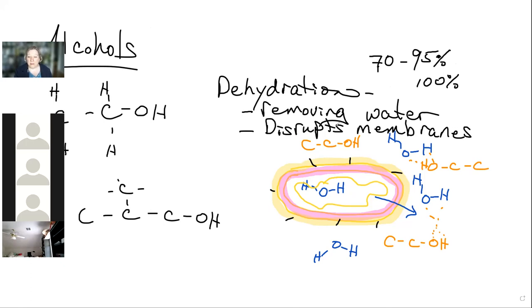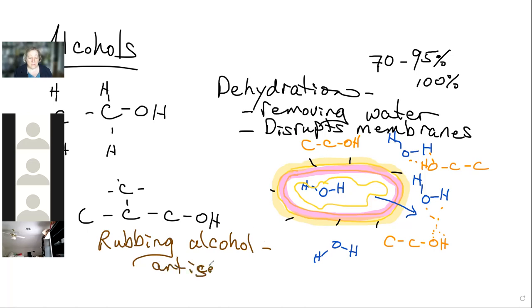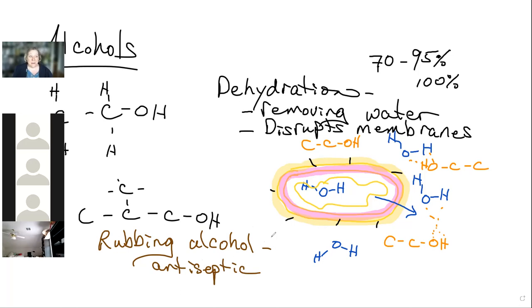Rubbing alcohol — isopropyl alcohol — is a common antiseptic. If you have a cut, you put some rubbing alcohol on it to knock down skin bacteria and kill any intestinal bacteria transiently on your hands. We do have intestinal bacteria — fecal material — on our hands transiently, unless you wash for at least 20 to 30 seconds.